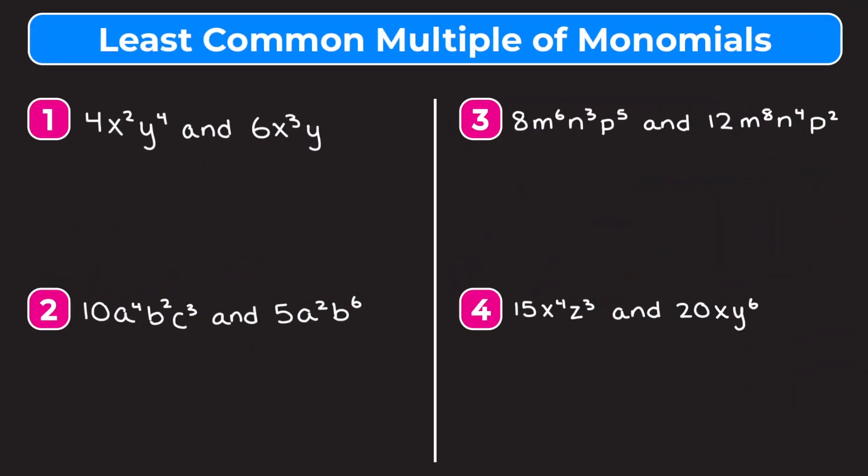In this video we're learning how to find the least common multiple of monomials. In example one we have two monomials: 4x squared y to the fourth and 6x cubed y. We want to find the least common multiple, so I'm going to find the LCM of each part of the monomial. First, I'll find the least common multiple of the numerical parts — the LCM of 4 and 6.